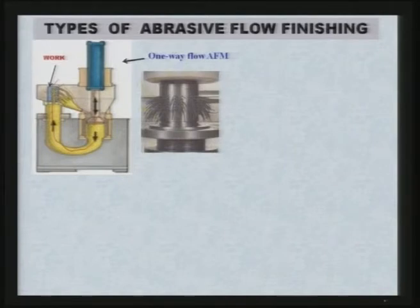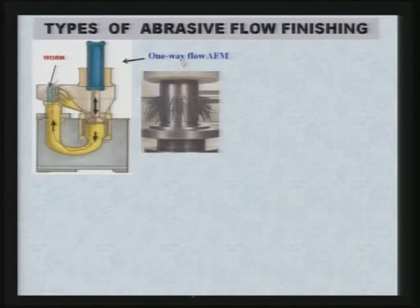A practical example: a cylindrical part with hundreds of very fine holes less than 1 mm in diameter. Medium is supplied through a proper tooling arrangement, flows through these holes, is collected, and resupplied. When abrasive particles contact the peaks of the hole surfaces, they are sheared off, giving much better surface finish in miniature holes — something that cannot be achieved by any other process except abrasive flow finishing or magnetorheological abrasive flow finishing.